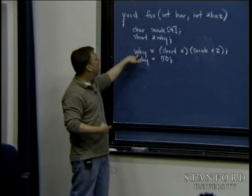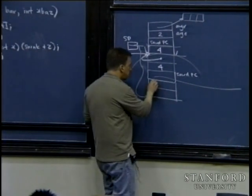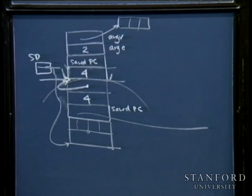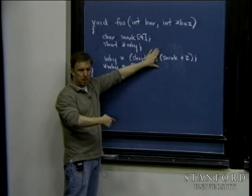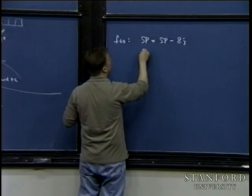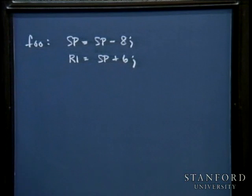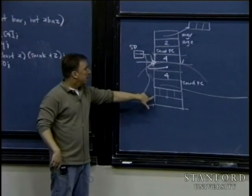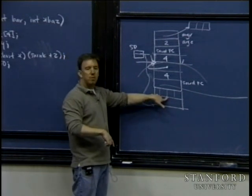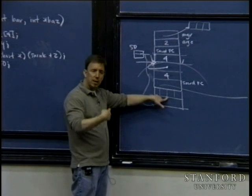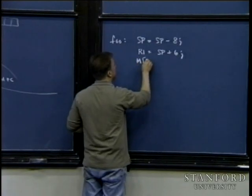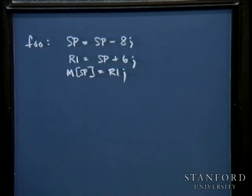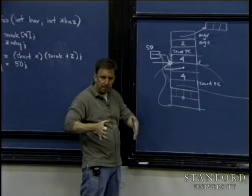The first statement updates y to hold the address of snink+2. I compute R1 = SP + 6: SP points to the base of the full activation record, go 4 bytes beyond to pass y, then 2 more bytes because snink is a char array and pointer arithmetic equals regular arithmetic here. Then M[SP] = R1, storing that address into y's slot.